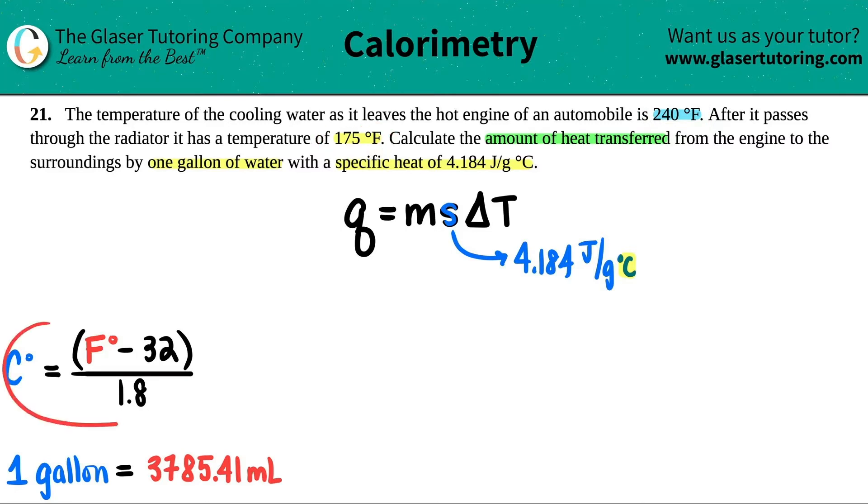So the first thing we have to do is convert what those are into Celsius. I put the formula right here for you. So we got 240 degrees Fahrenheit. Let's just figure out what that is. I'm going to plug the 240 in here, minus 32, and then take that number and divide by 1.8. So 240 Fahrenheit minus 32 divided by 1.8, I get roughly 115.56 degrees Celsius.